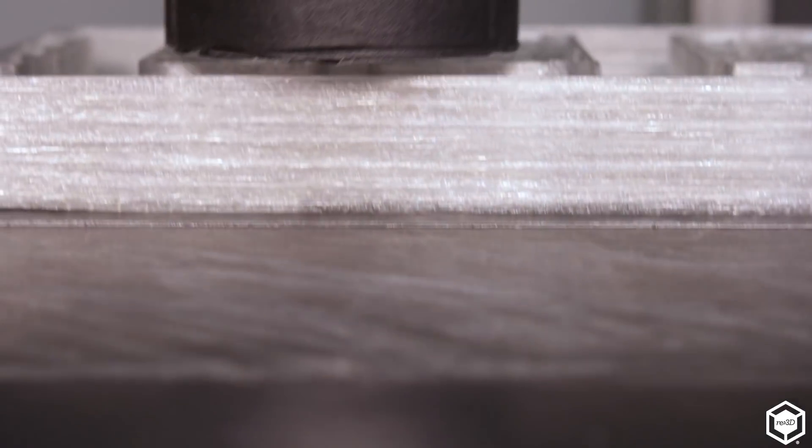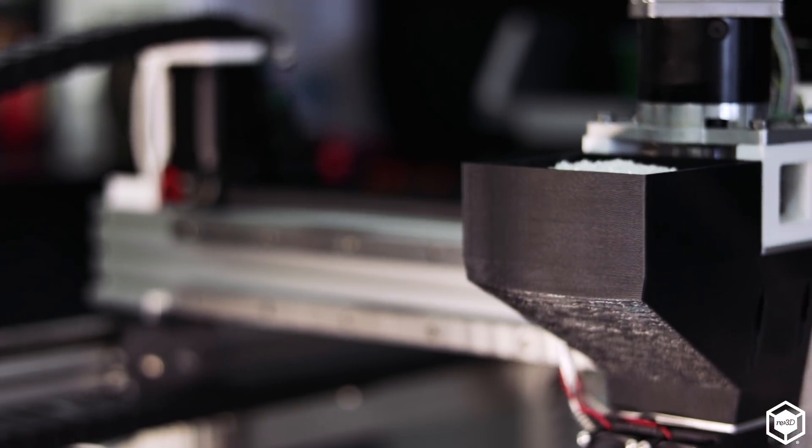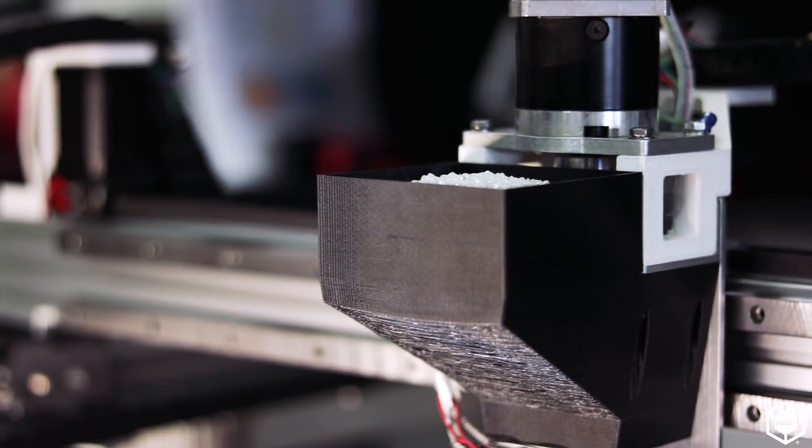One of the great projects we're working on now is the pellet printer. It's taking the Gigabot platform, removing the standard printhead that traditionally uses filament, and replacing that with a new printhead that accepts plastic pellets.